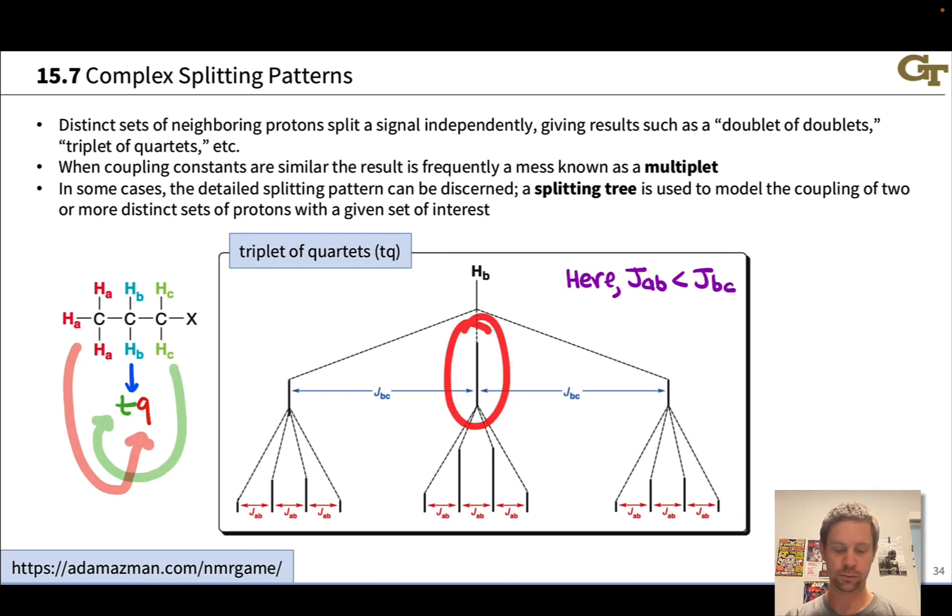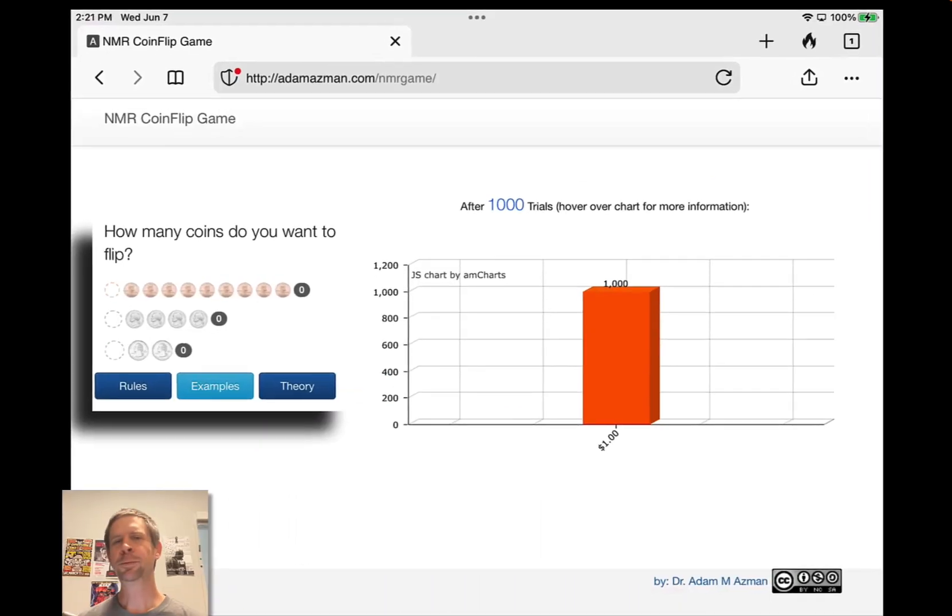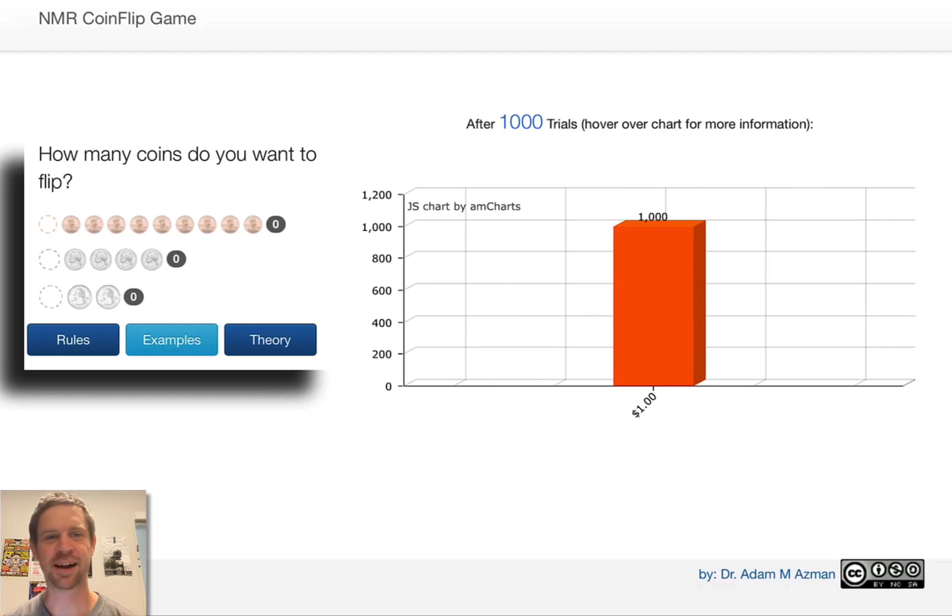To help us get a sense of how these complex splitting patterns arise, I wanted to show you this awesome resource for exploring complex splitting patterns and coupling developed by Adam Asman of Butler University. We start with coins, and we're flipping a bunch of coins. This is analogous to having nuclear spins pointed up or down, and patterns analogous to the splitting patterns that we see in proton NMR spectra will appear.